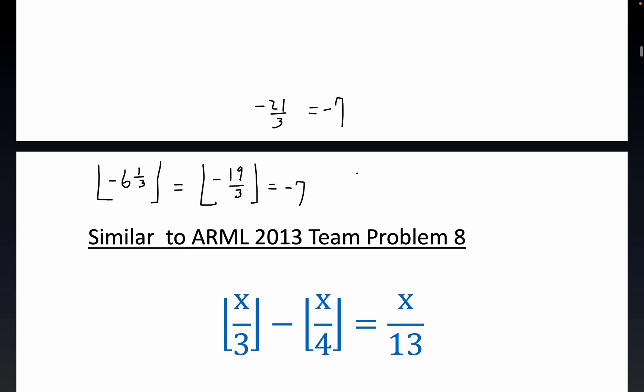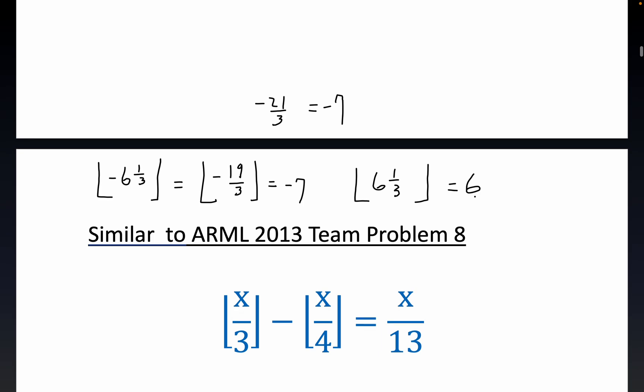Now if you want to contrast that with just six and one-third, that just maps back down to six, because six is the greatest integer that is less than six and one-third. So you see, you're just going in the opposite direction to the left of zero. Minus seven is the largest integer that is less than minus six and one-third, just like six is the largest integer that is less than positive six and one-third.